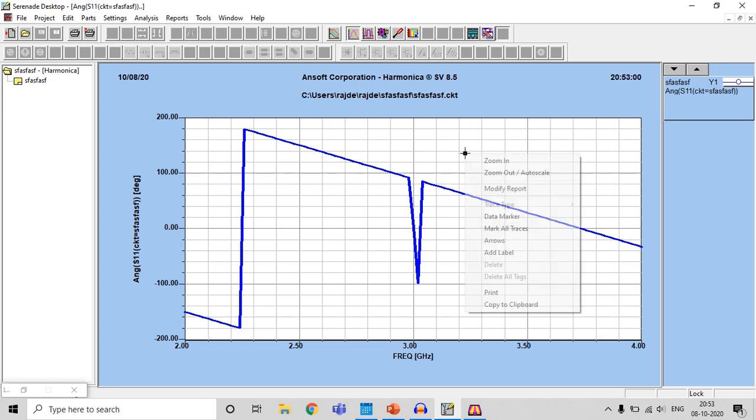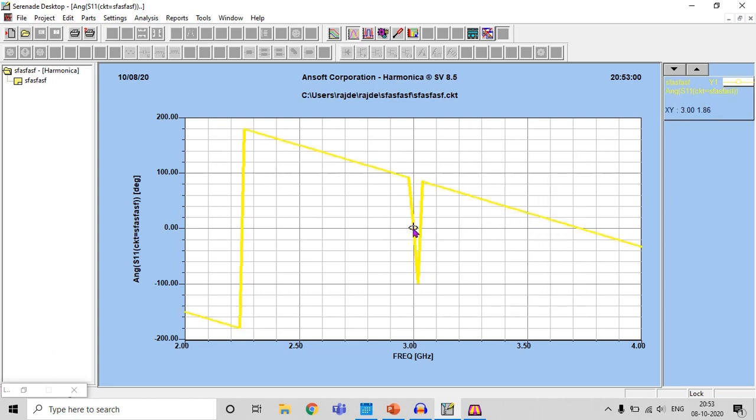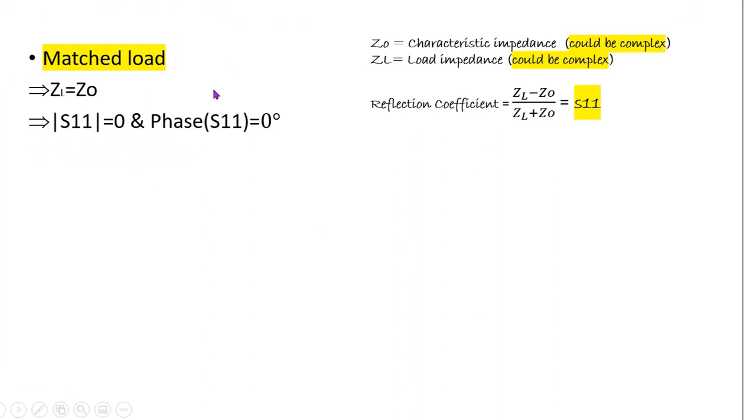To see it clearly you can also do one thing - right click here, select data marker and point here. And you can see at 3 gigahertz it is showing something like... it is nearby zero. I think my data marker is not placed correctly so it is showing 1.86 degree, but it is close to zero only. So we can assume at 3 gigahertz we are getting the phase of S11 zero. So we were doing correctly, so for matched load we are clear because we have already done it.